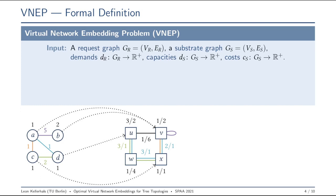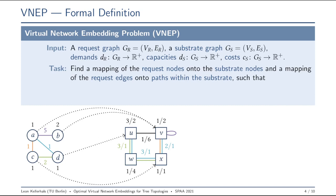The task is to find a mapping of the request nodes onto the substrate nodes, such as this one, and a mapping of the request edges onto paths within the substrate. For example, the blue edge here is mapped onto this blue path, such that all the node and edge capacities are respected. Take, for example, this substrate edge here. We have the blue path and the orange path going along it, which both have a demand of one, and we have a capacity of two right here. And the cost that is used by all of the nodes and edges overall is minimized.